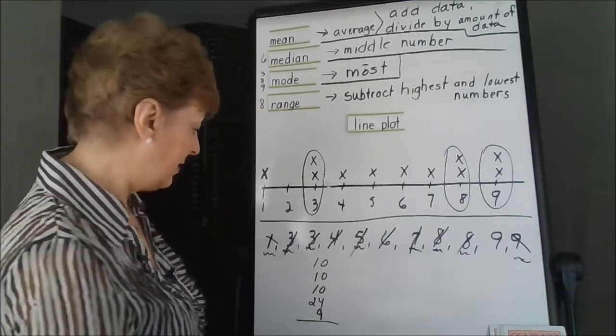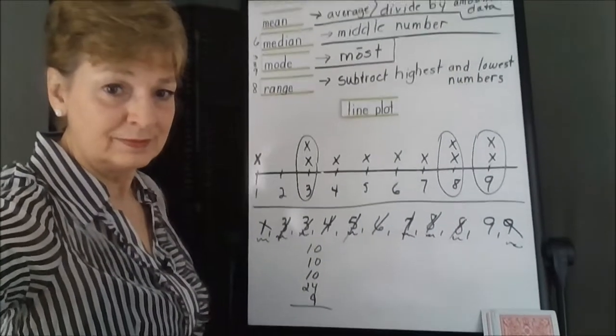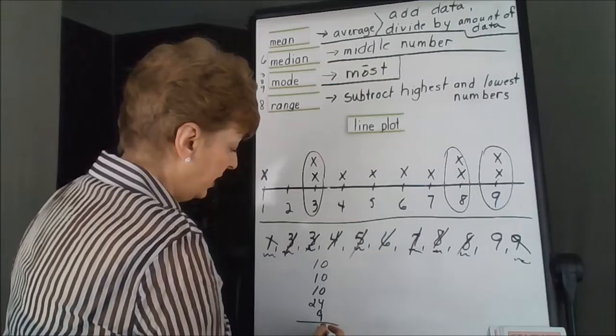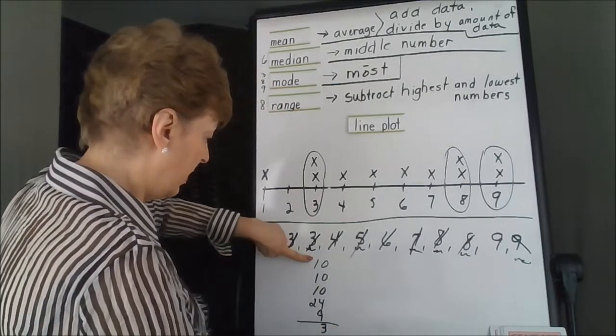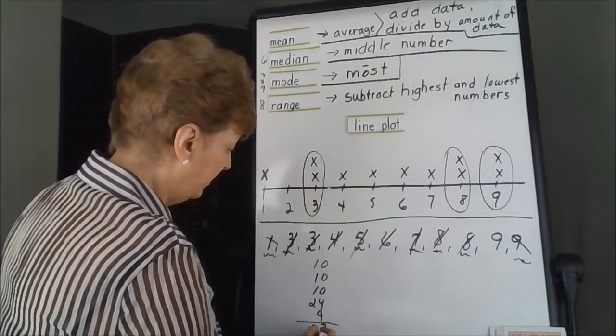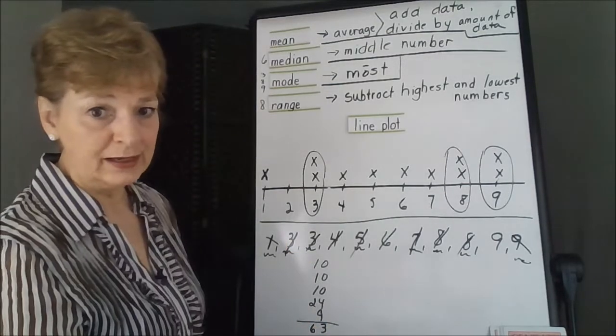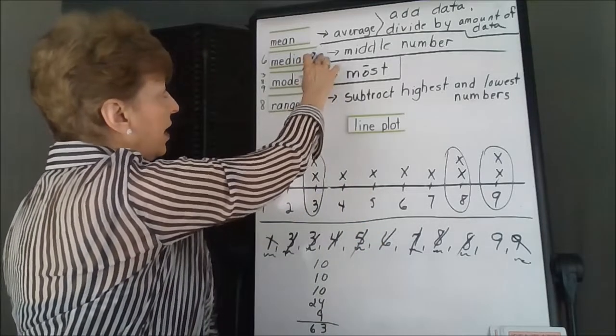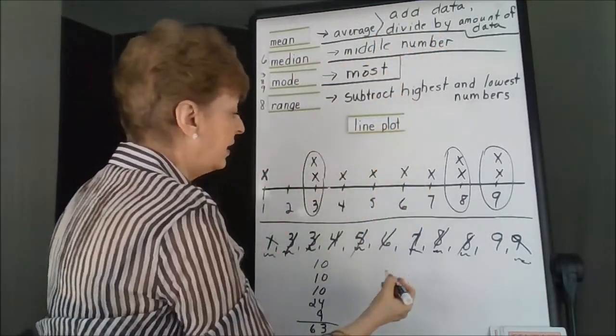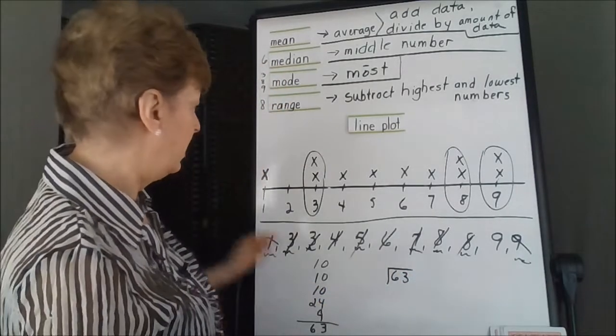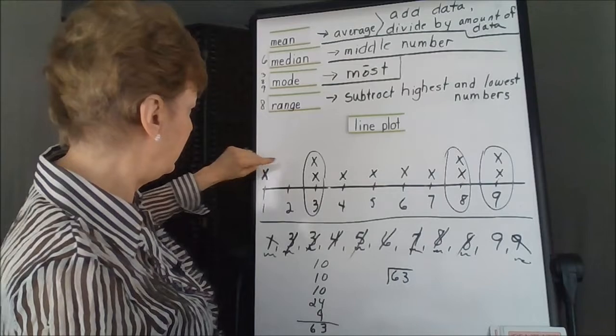Now when we add 9 and 4 is 13, I'm going to carry 1, 1, 2, 3, 4, 5, 6. So 63 would be our total. So the adding of the data was 63. And then we're going to need to divide by the total number of data pieces.